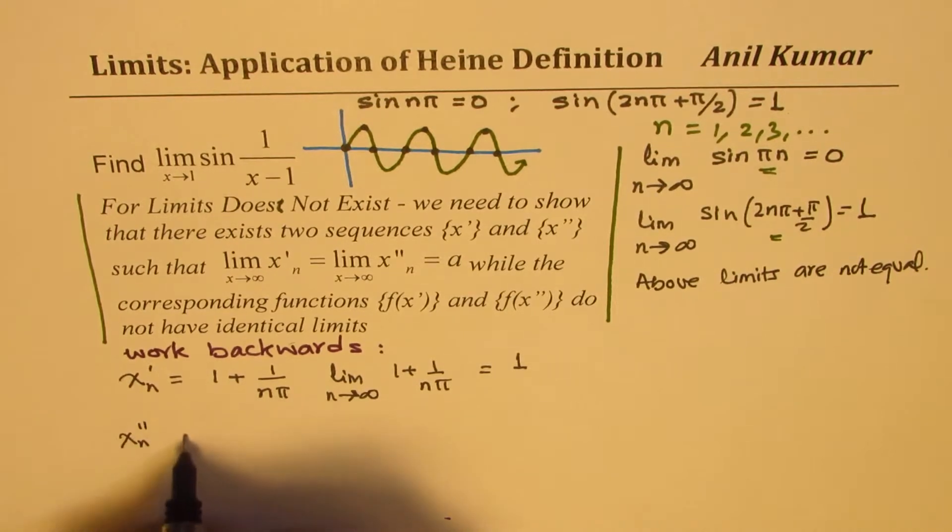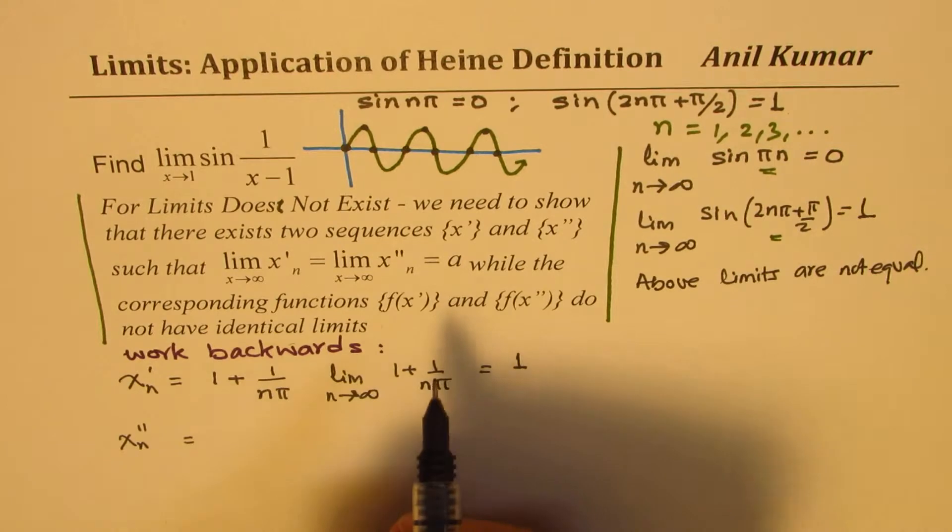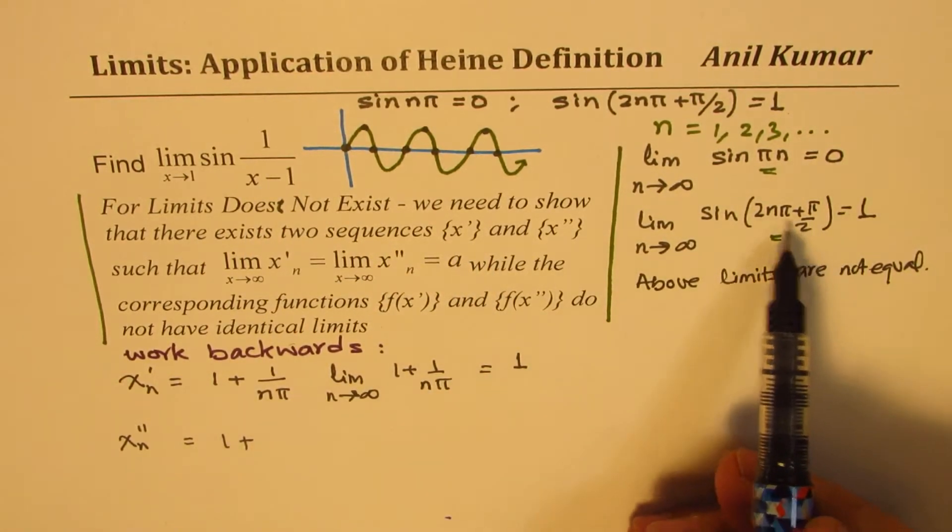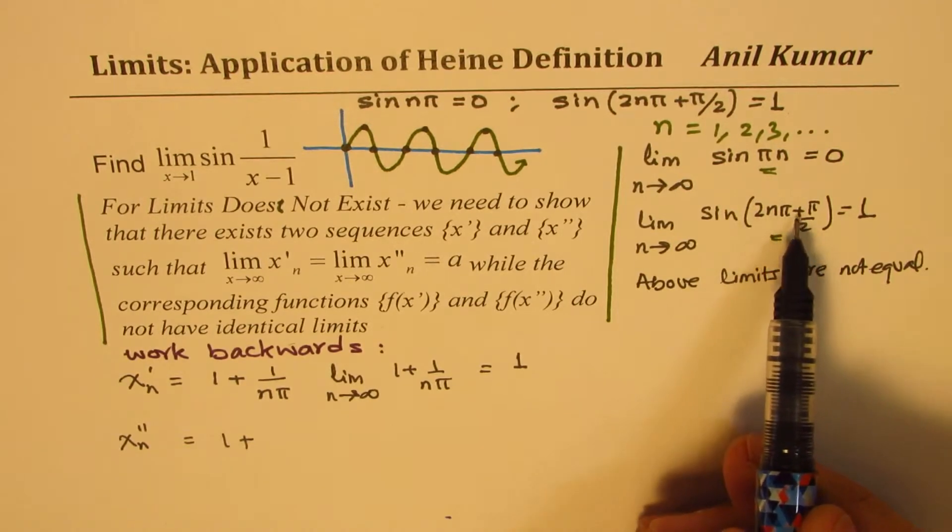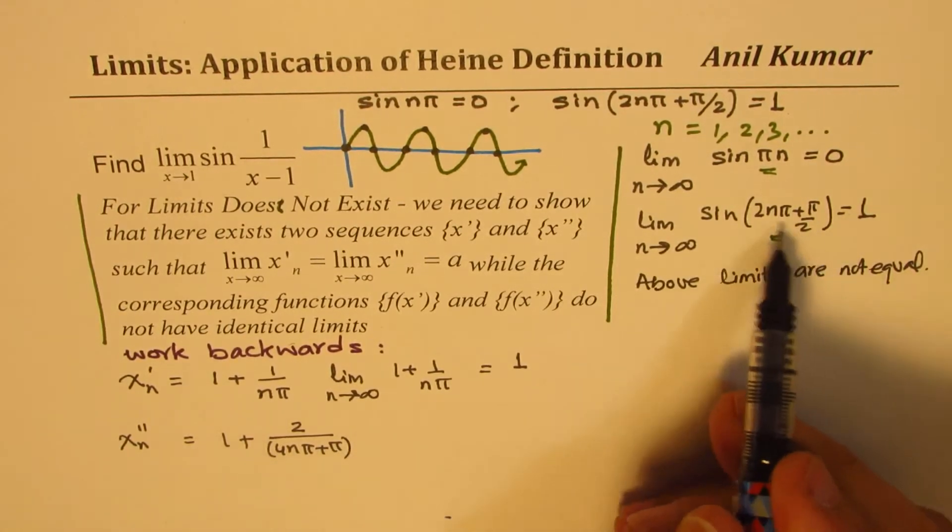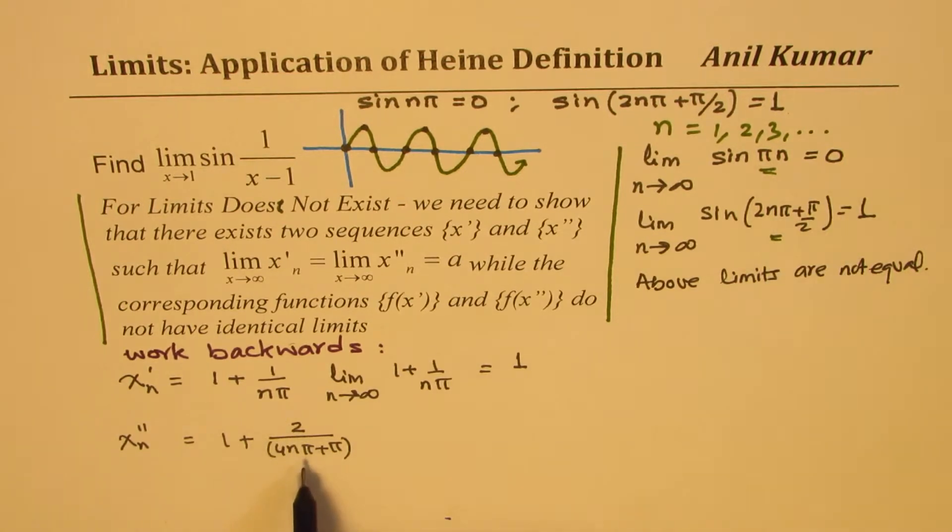Now, what could be the other sequence? We are writing that as x_n double prime. So we have to cancel one, so we write 1 plus something. And what do I need? I need this as 2n pi plus pi over 2. So I can write this as 2 over, so we just flip it and write this as 4n pi plus pi. That is what we get: 2 over 4n pi plus pi.